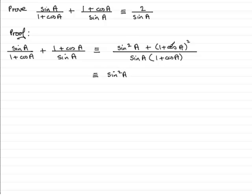So we'll have the sin squared A term like that. We're going to expand this square bracket. So we will have 1 times 1, so that's going to be 1. We'll have 1 times cos A, which is cos A, plus another 1 times cos A, so that's going to be plus 2 cos A. And then we're going to have the last term cos squared A, and that's going to be all divided by sin A multiplied by 1 plus cos A.